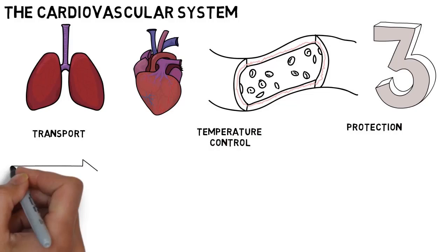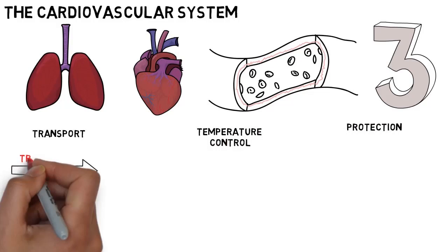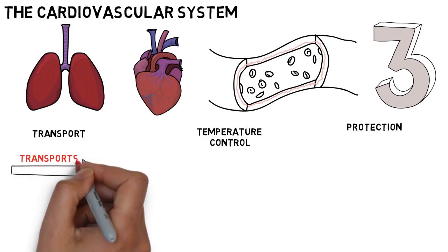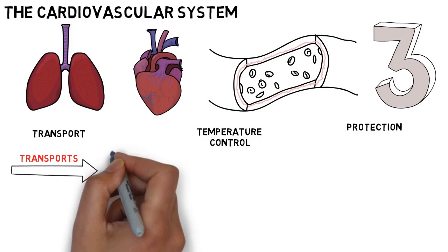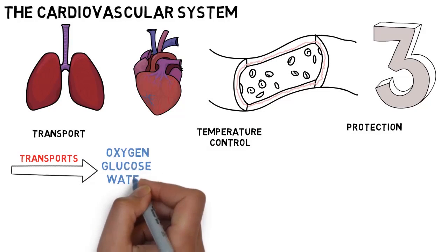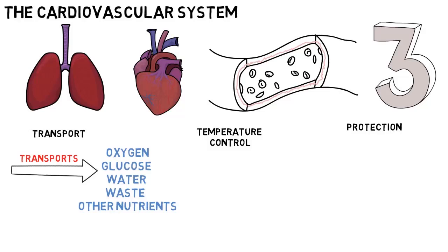Transport. The blood is part of the cardiovascular system and is used to transport various things around the body to the organs that need them, such as oxygen, glucose, water, waste and other nutrients.